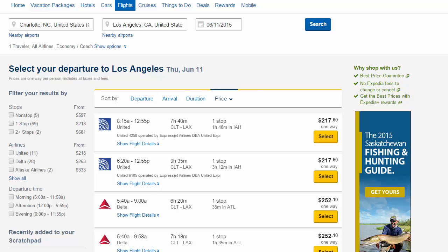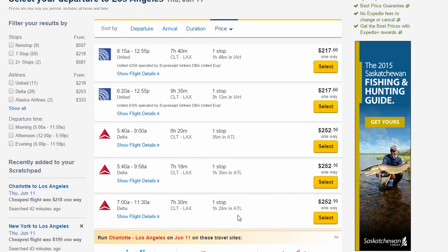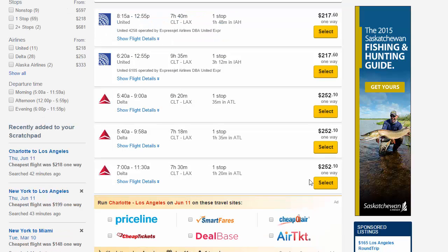So this screen is sorted in order of price. So the customer might say, wow, $217, that's a good price. But it's at 8:15 in the morning. I want to leave in the afternoon. They might come down and say, let's see, where's a higher price? Here's one at 7 a.m. on Delta. Still too early, and it goes through Atlanta. Maybe they don't want to go through Atlanta.